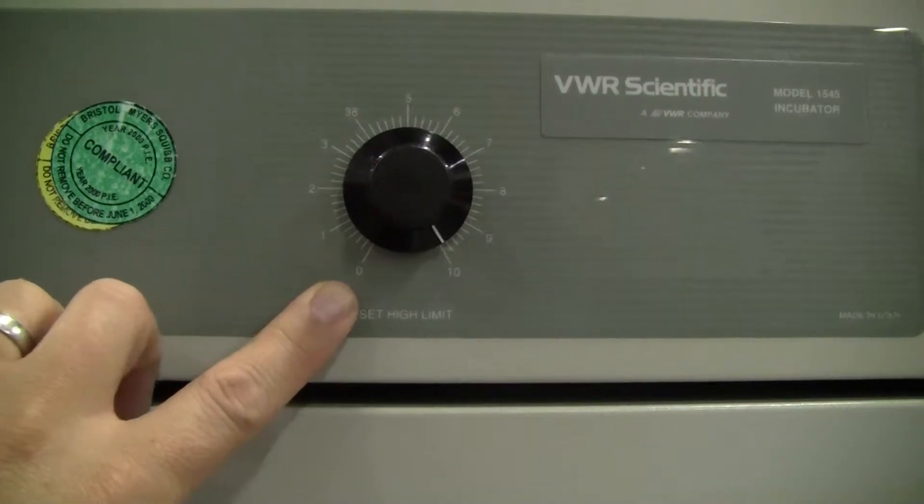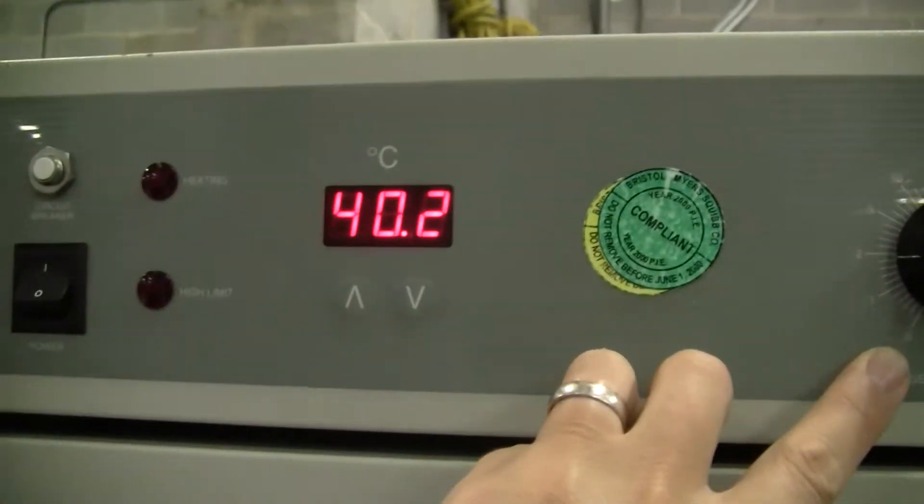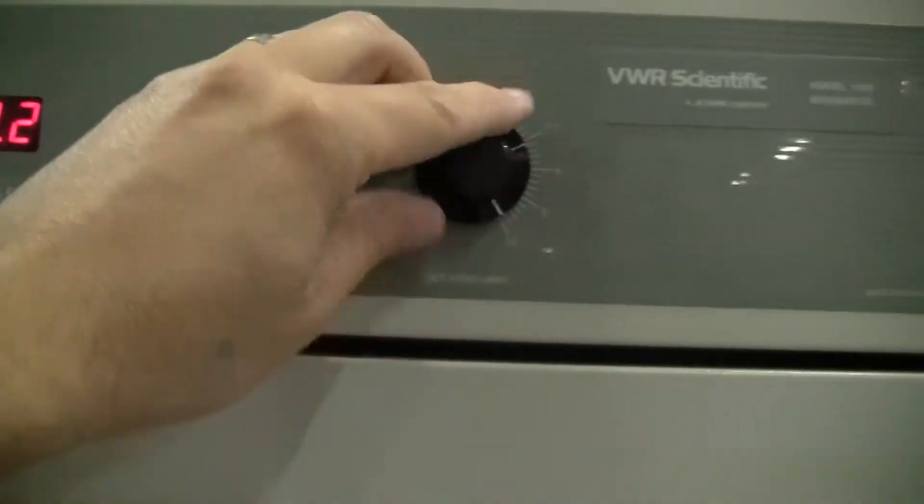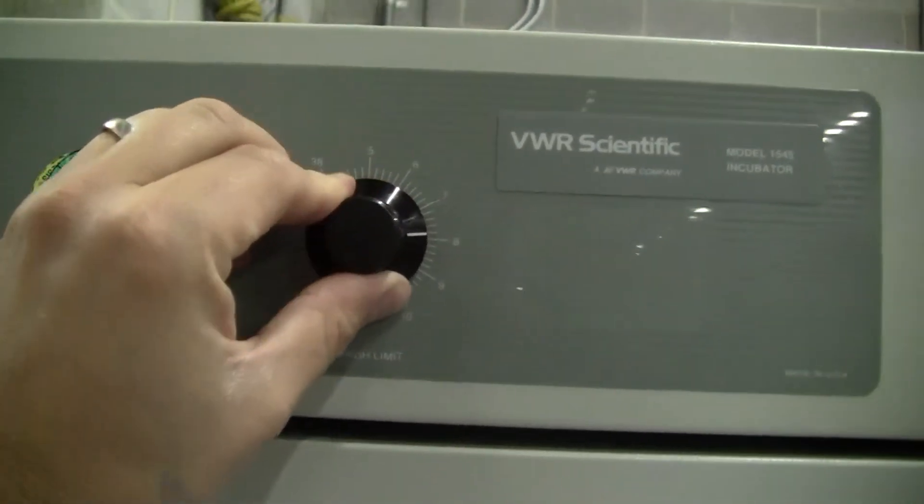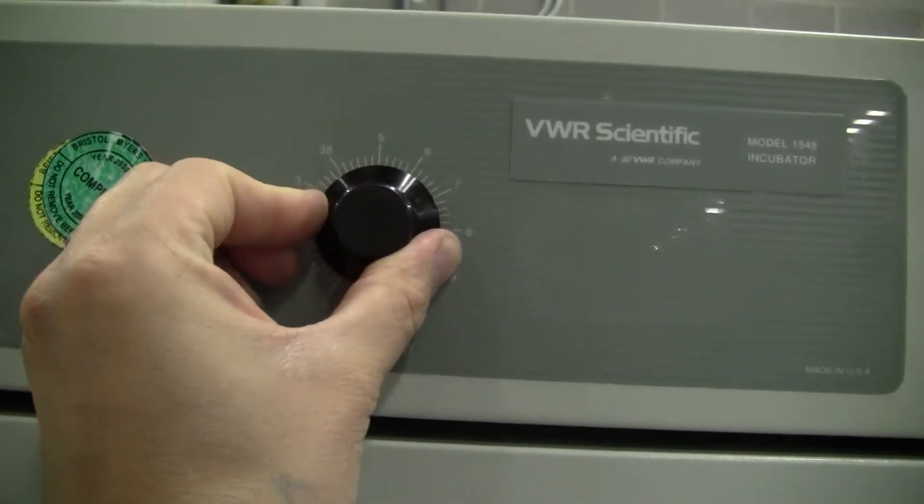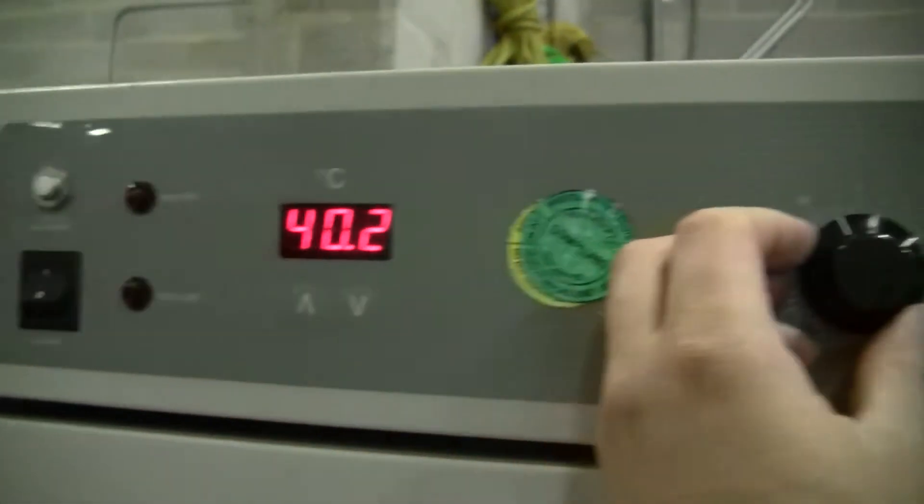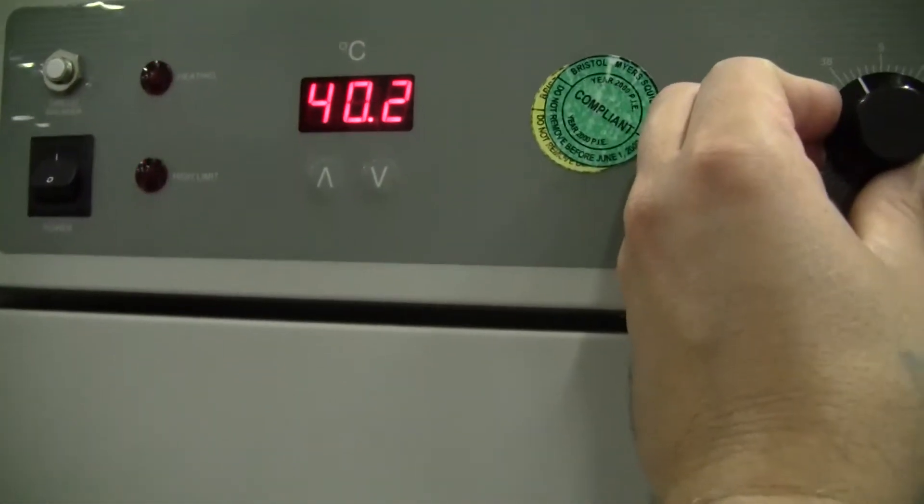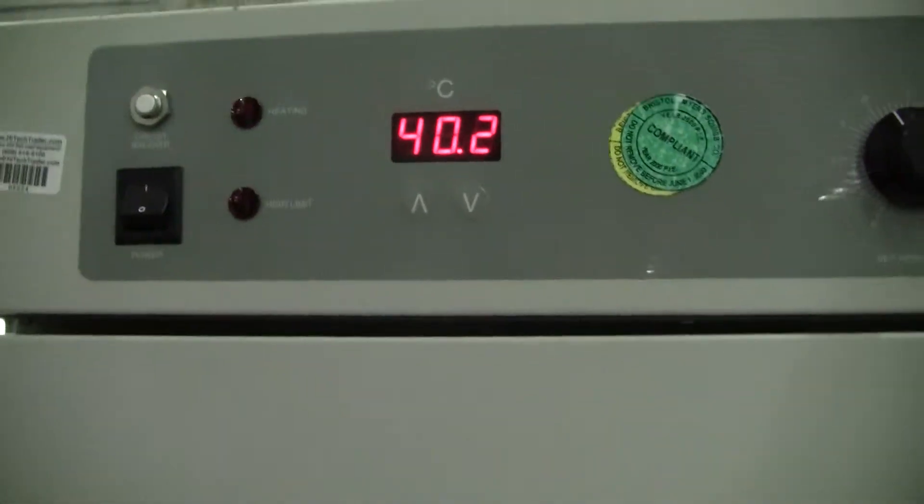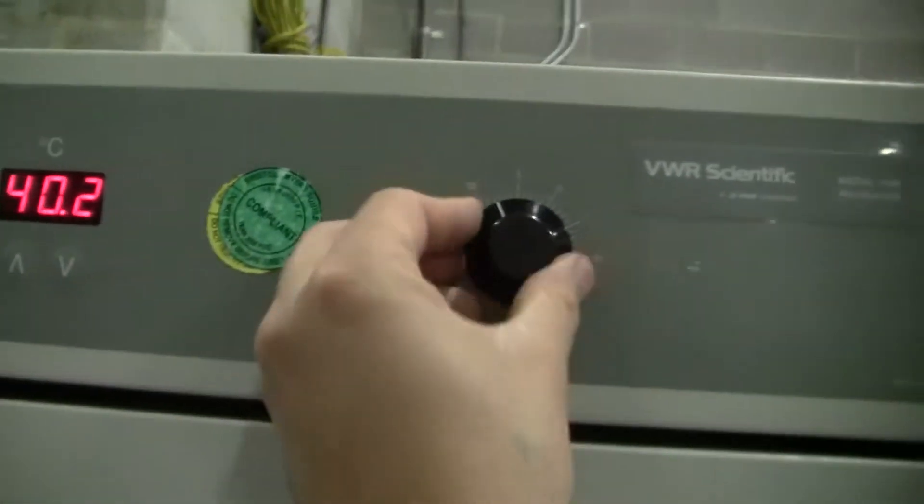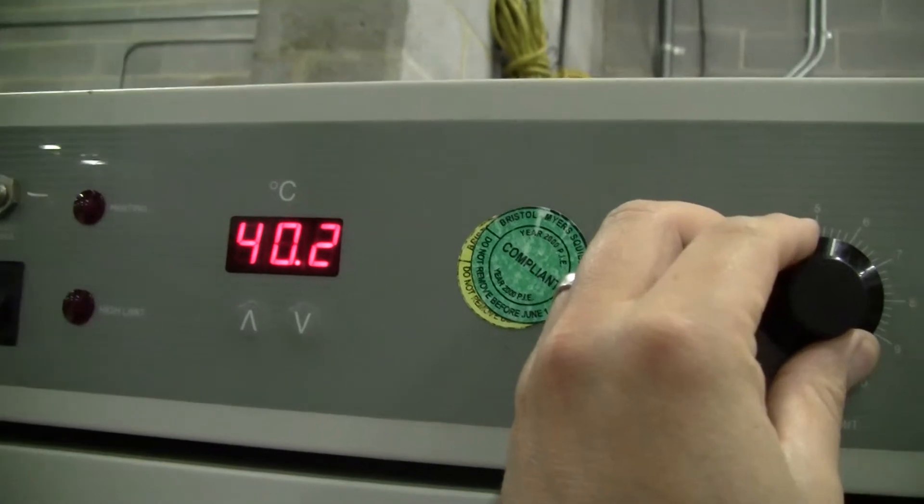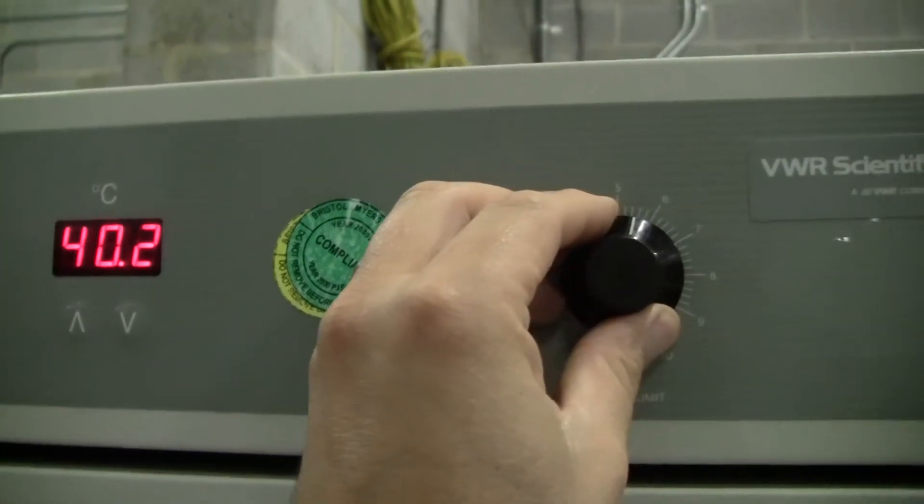The way the over temperature is set is once the unit is stable at a particular temperature, you dial back the over temperature until it clicks. So the over temp would now be set at 41.2 degrees.